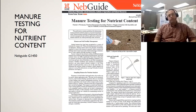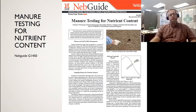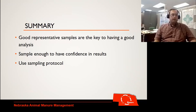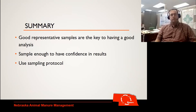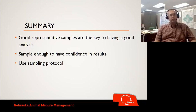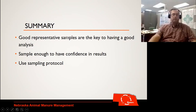We do have a nice NEB guide from Nebraska on manure testing — that's NEB guide G1450, titled Manure Testing for Nutrient Content. In conclusion, the key is just like any other testing: you've got to have a good representative sample. It's only as good as the time you put into getting those samples. Sample enough to have confidence in your results, and if you take one that is vastly different than the next, take some more. And lastly, write down your sampling protocol and try to use it consistently over time.